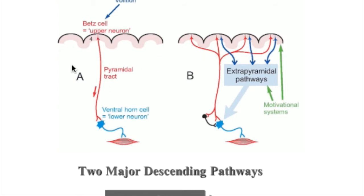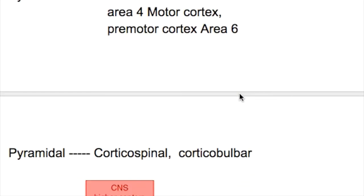The pyramidal neurons have their cell bodies in the motor cortex, area 4, and the association area 6. They descend directly through to the spinal cord and synapse directly with the ventral horn cells — the lower motor neuron — to control and inhibit movement of the muscles. All other neurons which do not start from the motor cortex are extrapyramidal.